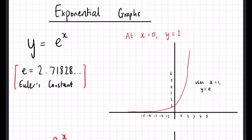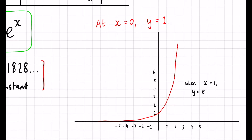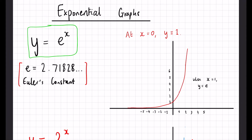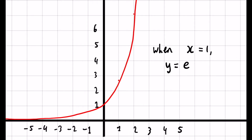The most famous type of exponential graph is y equals e to the x. e is a constant, just like pi — it's Euler's constant and is approximately 2.71828, going on forever. Exponential graphs share the property that no matter what the base number is, they will always have a y-intercept of 1, because anything to the power of 0 equals 1. When x is 1, the y value is just e, around that 2.7 value, as marked on the graph.